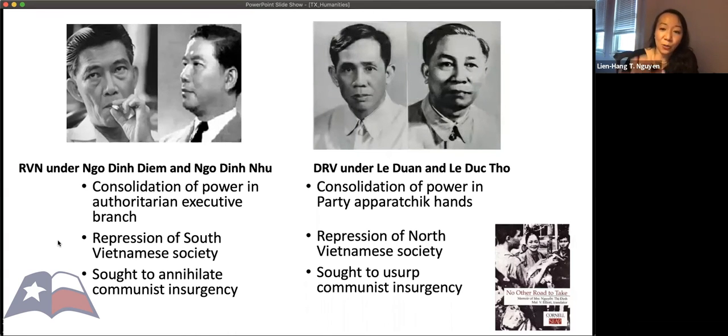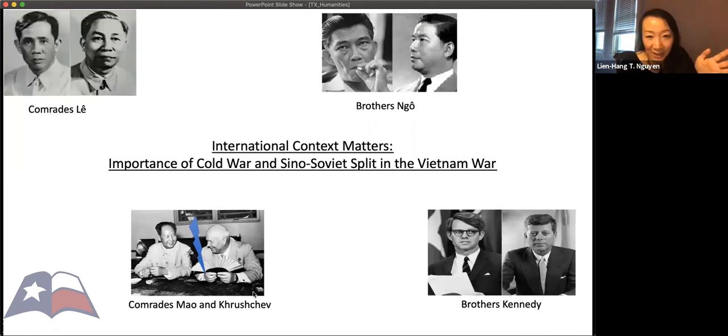I call this part, the house of Ngo, in which I introduce Ngo Dinh Nhu, who's on the left. And of course, President Ngo Dinh Diem on the right, but I also introduce Madame Ngo, as well as Archbishop Toc, who is their older brother. On the North Vietnamese side or the DRV side, I emphasize the role of the comrades, Le, in particular, Le Yuen, pictured on the left, and his right-hand deputy, Le De Tha. What they did just like the Ngo brothers in the South was that they consolidated power in the North and party apparatchik hands.